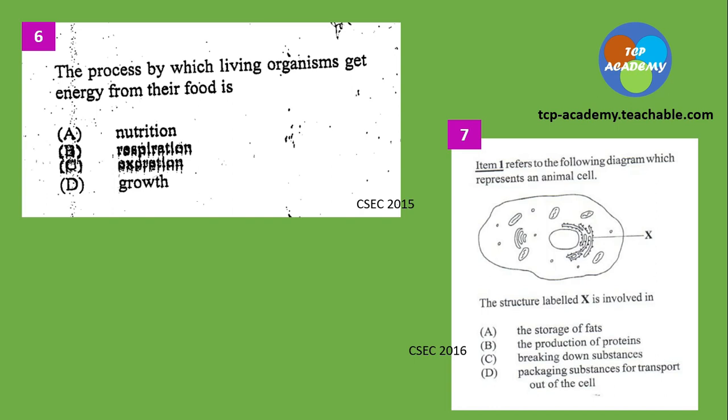Question number seven comes from the 2016 paper. It reads: item one refers to the following diagram, which represents an animal cell. Which structure labeled X is involved in A, B, C, or D? You want to identify the structure labeled X and determine what it is involved in. Pay keen attention to the labeling so as to ensure that you get full marks.